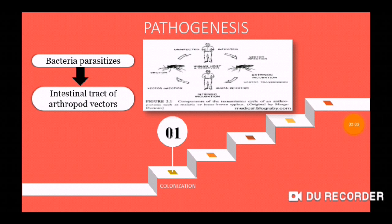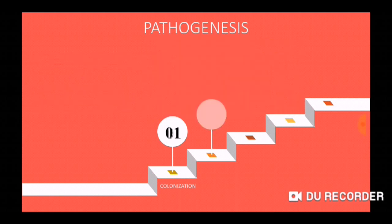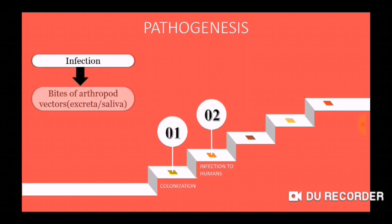Pathogenesis. The first step is colonization. This bacteria mainly parasitizes inside the intestinal tract of arthropod vectors like lice, mites, chiggers, etc. The next step is the infective stage. This infection mainly spreads to humans through the bite of these vectors. The organism mainly presents in the excreta or saliva of the arthropod vectors.